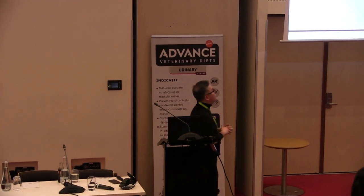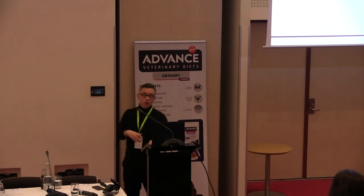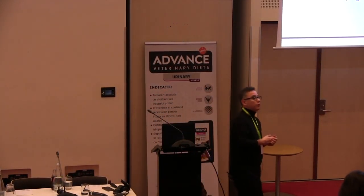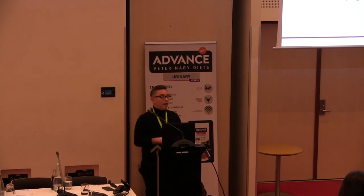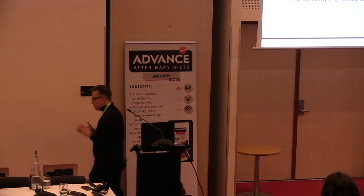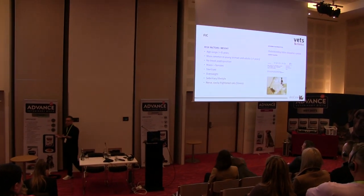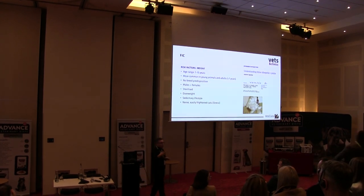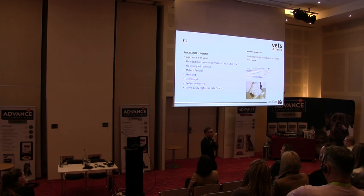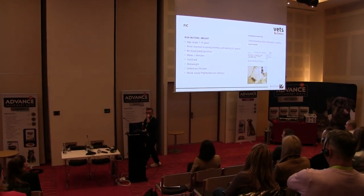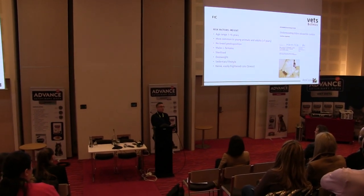What are the risk factors? We have mainly patient factors. This disease ranges between 1 and 15 years old; it's more common in young animals, probably due to stress, even less than 7 years old, and there is no breed predisposition. More frequent in males than in females, and more common in sterilized patients. In the past, people thought that when you castrate a young cat the urethra was small, but a recent study does not support that — the urethra is normal when you sterilize a cat at a young age.